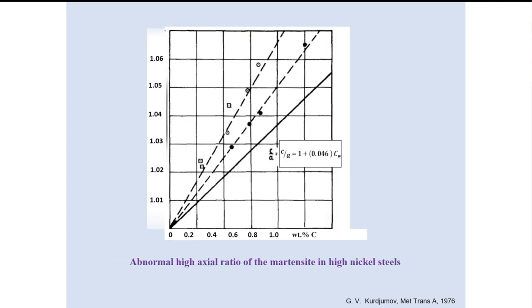For iron-aluminum-nickel alloys, the trend is reversed: the C/A ratio is more than the ideal value, and upon heating it tends towards the ideal value. The explanation here is straightforward. In this alloy system, the ideal value corresponds to a situation where 80% of the carbon atoms are on one of the three sub-lattices. In this case, apparently more than 80% — or all — of the carbon atoms are ordered, and therefore the C/A ratio is higher than the ideal value.